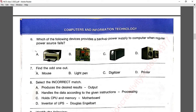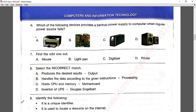Question number seven: find the odd one out — mouse, light pen, digitizer, and printer. Mouse, light pen, and digitizer are all input devices, while printer is an output device. Answer D — printer — is correct.